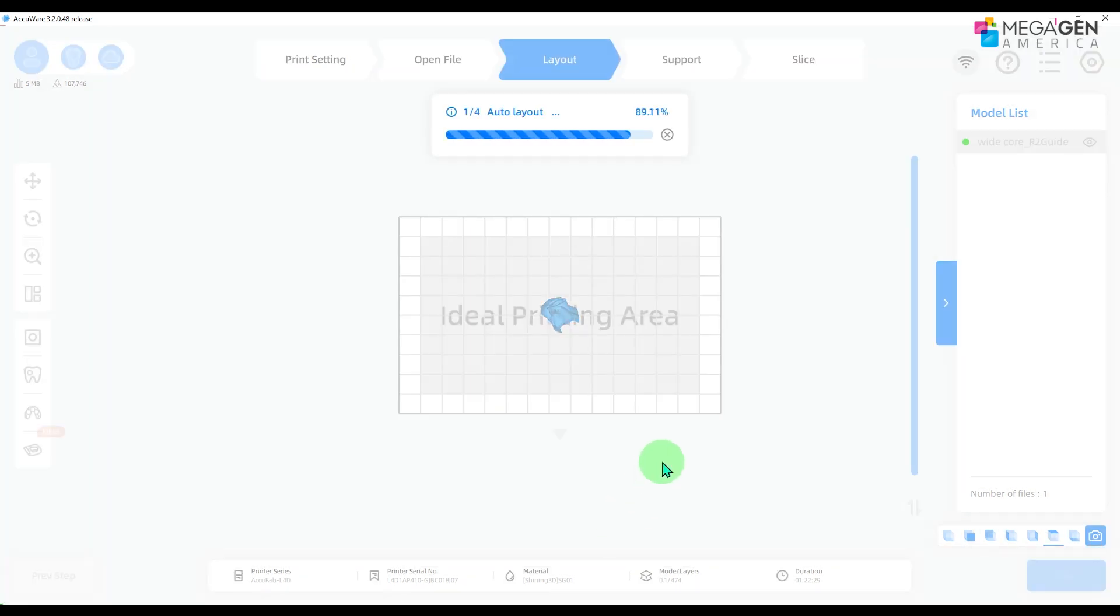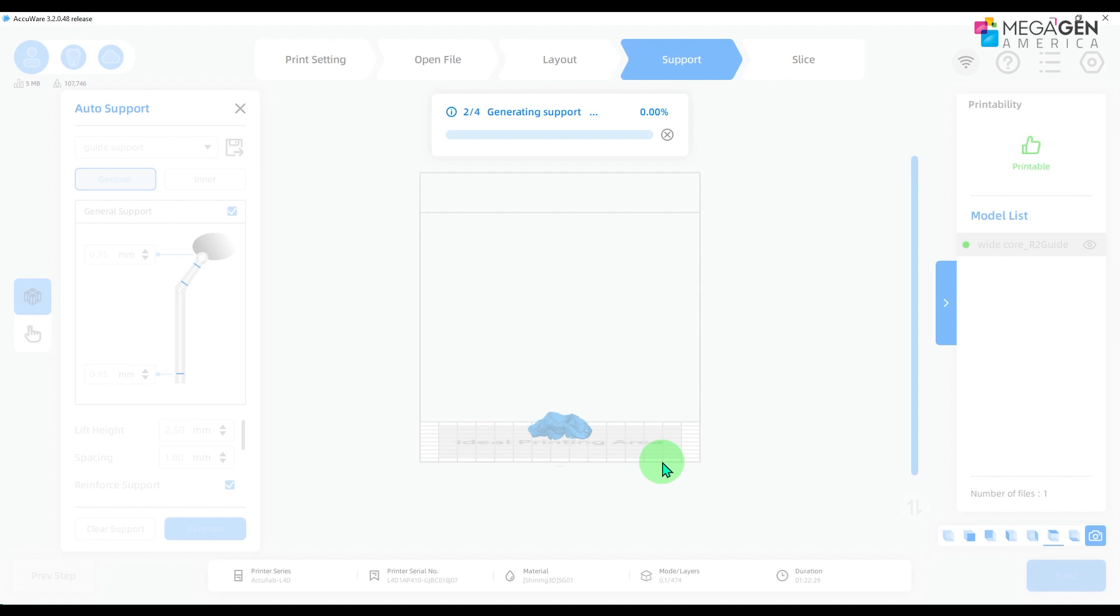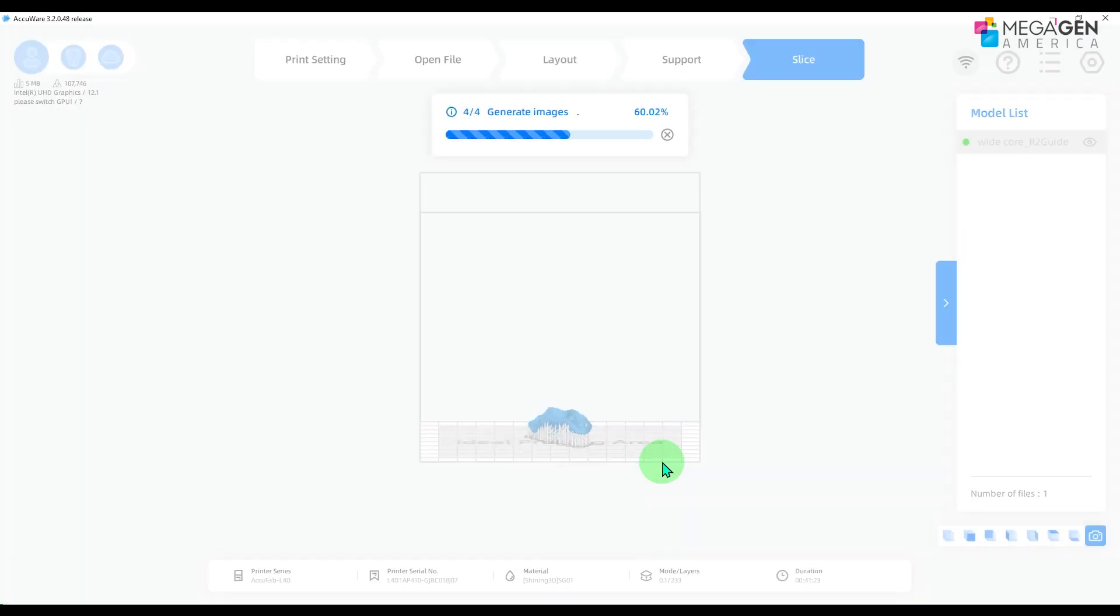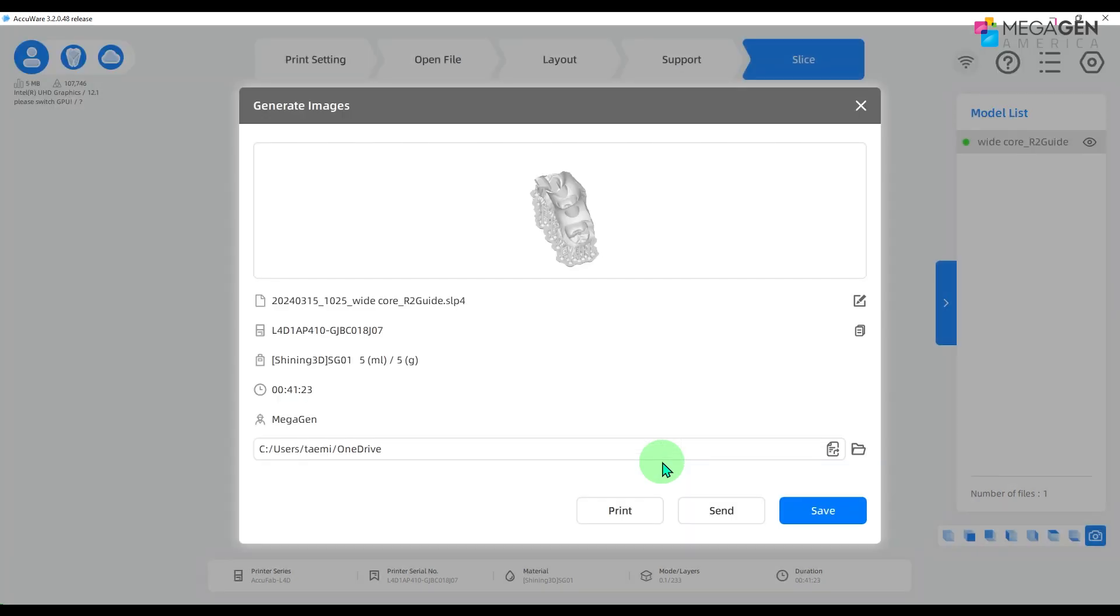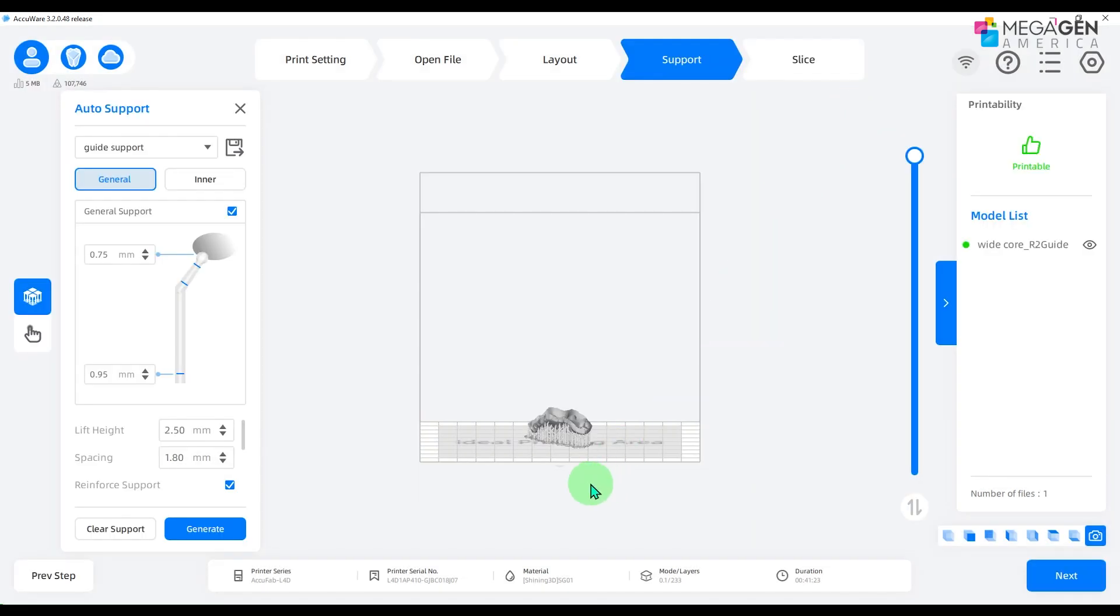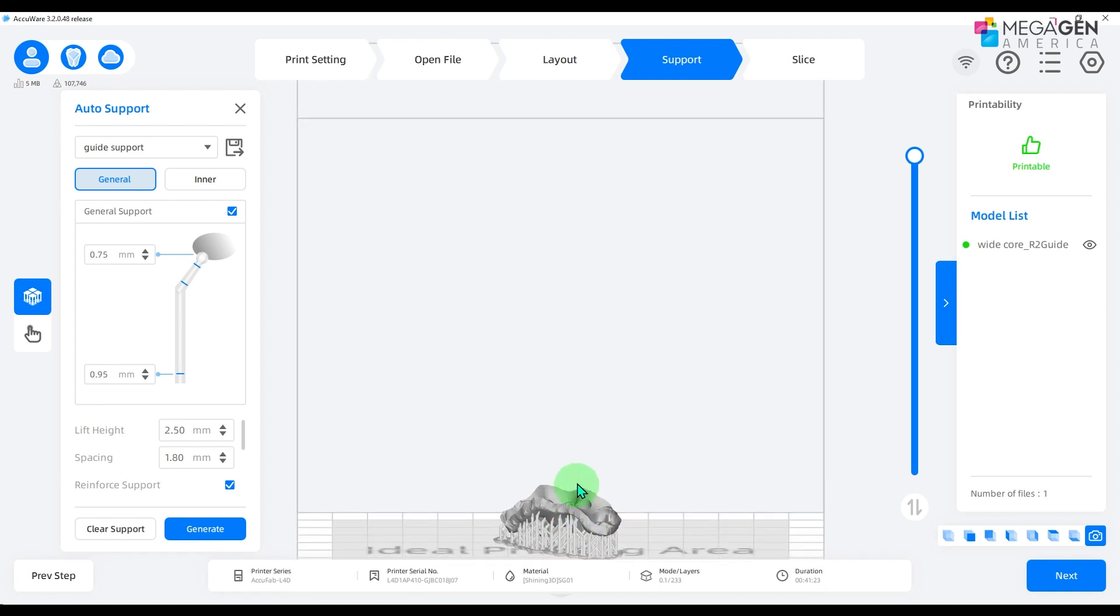However, the support may not be in the most optimal position. So I recommend editing the supports before printing. Go back to the support tab. Click on the finger icon on the very left to edit the supports.